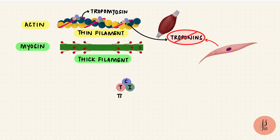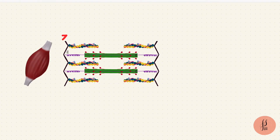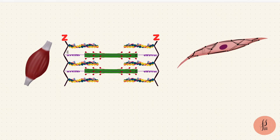Remember that in skeletal muscles, it was troponin that starts the show — when calcium binds to troponin C, and then the cross bridges start forming. So smooth muscles don't have this step. Instead, they've got something called calmodulin, and I'll talk about this more in my video on smooth muscle contraction. The thin filaments in skeletal muscles are attached to the Z-lines, but here in smooth muscle, actin attaches to the dense bodies, which are both on the surface of the cell and inside the cytoplasm. So in smooth muscle, the dense bodies are like the equivalents of the Z-lines.